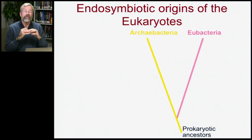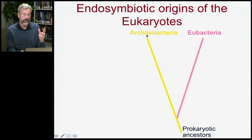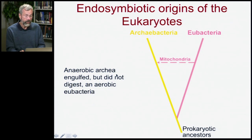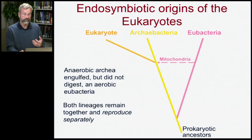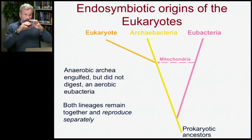Here is the schematic for the origins of the eukaryotic cell. We have prokaryotic ancestors from which two lineages diverged: the archibacteria, who liked extreme environments, and the aerobic eubacteria. At some point, an anaerobic archaea engulfed but did not digest an aerobic eubacteria, giving rise to the eukaryotes. In these eukaryotic cells there are now two gene lines: the chromosomes of the host organism and the DNA of what was formerly bacteria and is now mitochondria, continuing to reproduce separately.